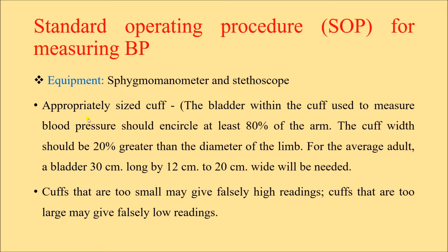If the cuff size is too small or too big for the subject, it can give false readings. The bladder within the cuff should encircle at least 80% of the arm. The cuff width should be 20% greater than the diameter of the limb. For the average adult, a bladder of 30 cm long and 12 to 20 cm wide is needed. If the cuff is too small it gives falsely high readings; if too large, falsely low readings.